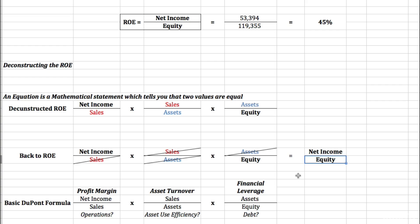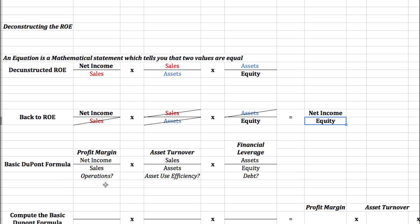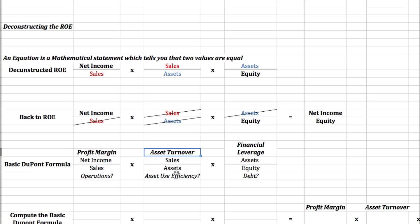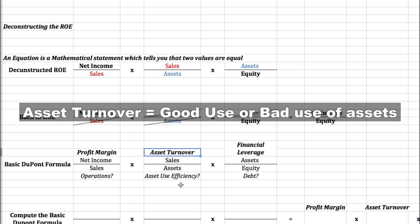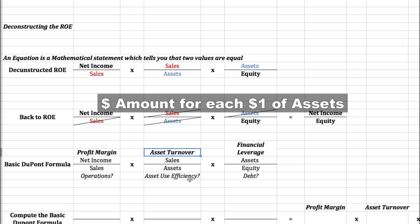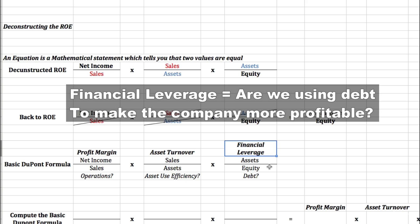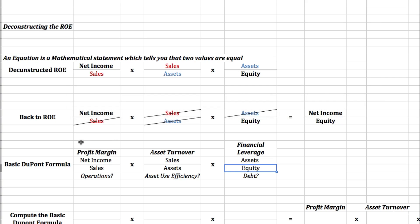This means that the return on equity is influenced by three main factors. The first formula allows us to see the operational efficiency of the company. The second formula — sales over assets — is the asset turnover, which tells us whether the company is using its assets in an efficient way: how much sales the company is able to generate with each dollar of assets. And then the third factor is the financial leverage, which is given by the assets over equity. So here we can ask: is the return on equity increasing due to the profit margin, the asset turnover, or the financial leverage?